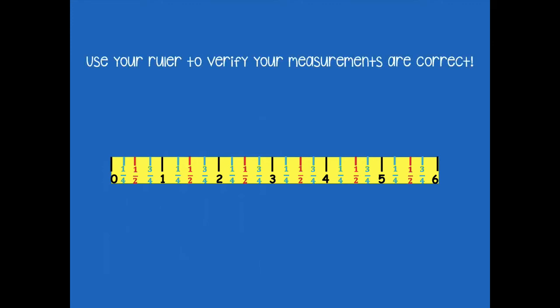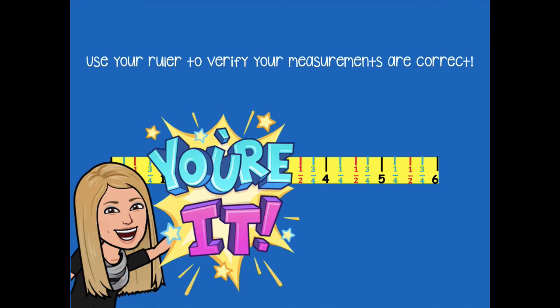Use your ruler to verify your measurements are correct. Grab your ruler — make sure that you still have one inch, and look to see if your one quarter inch matches up to the one quarter inch on your ruler, same for your half inch and your three quarter inch. Pause the video, do that, and then click play when you're ready for the next step.